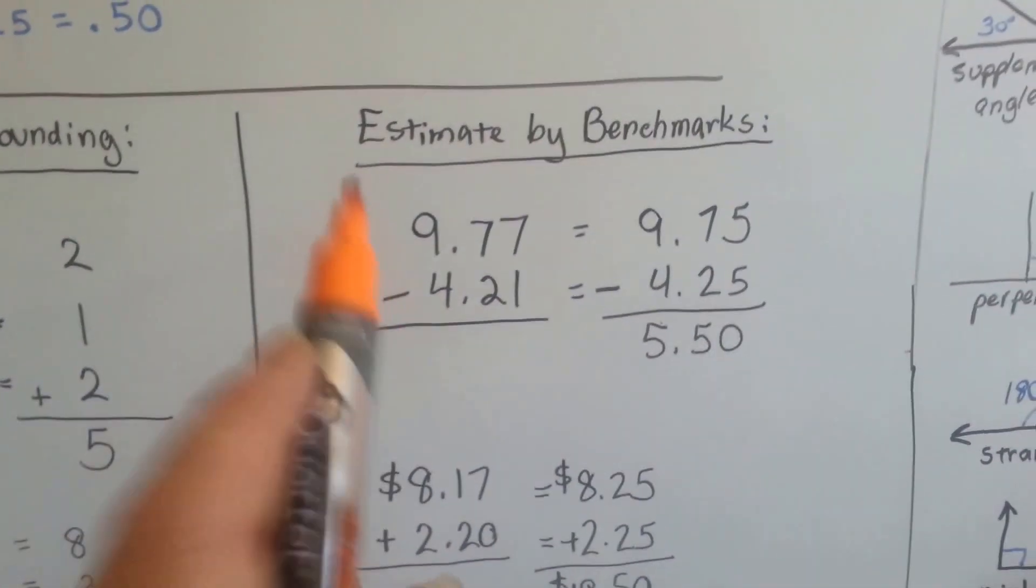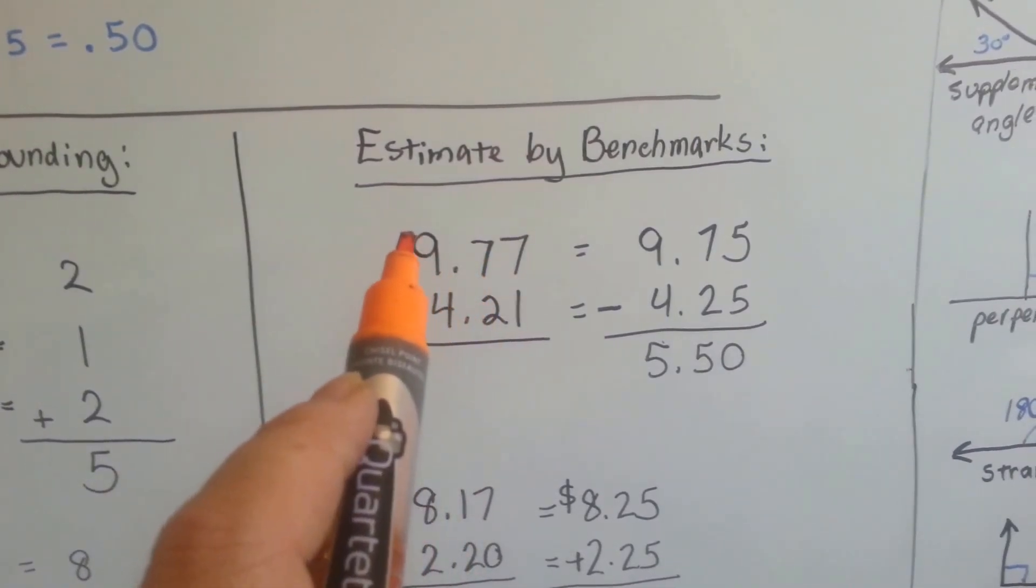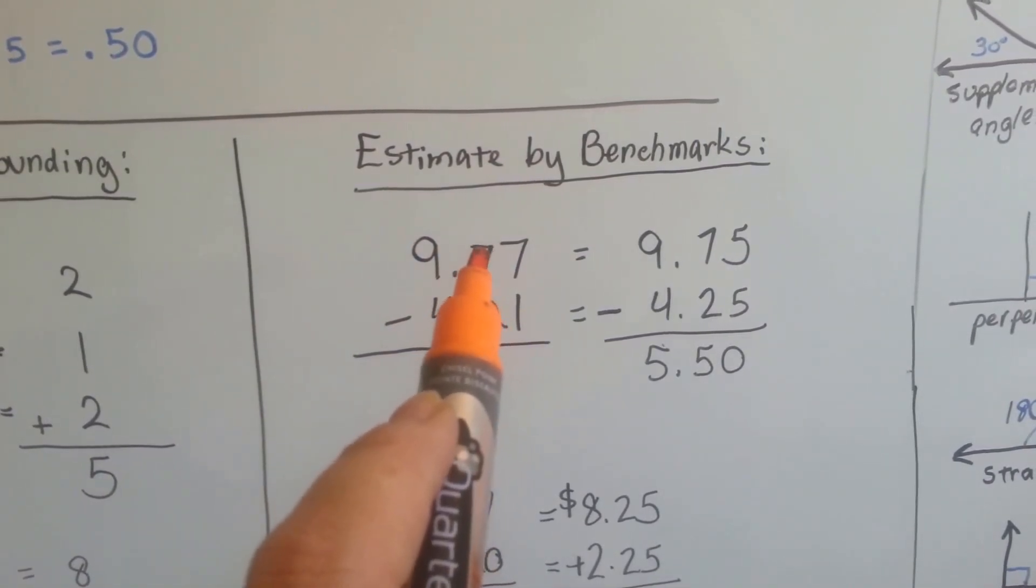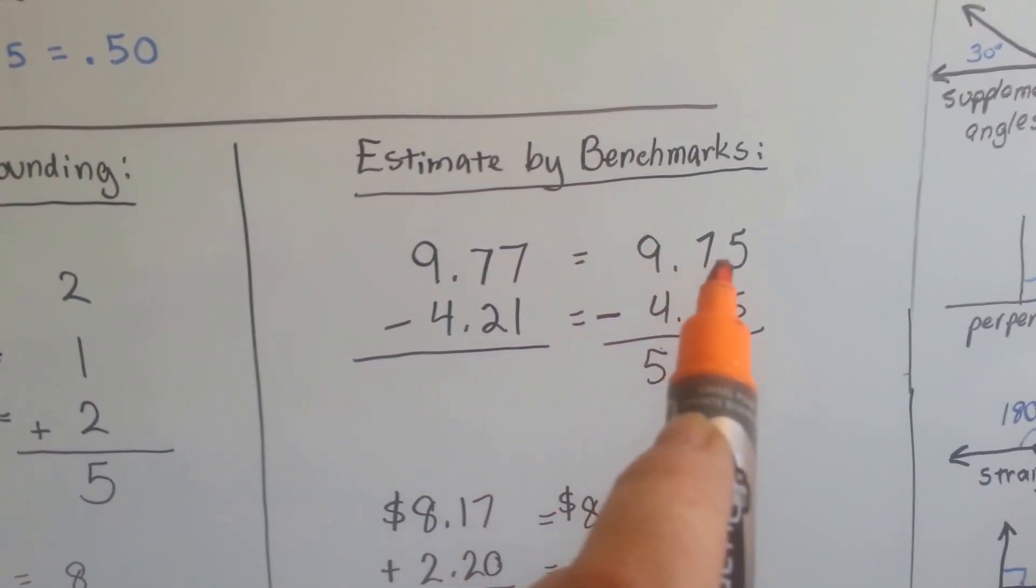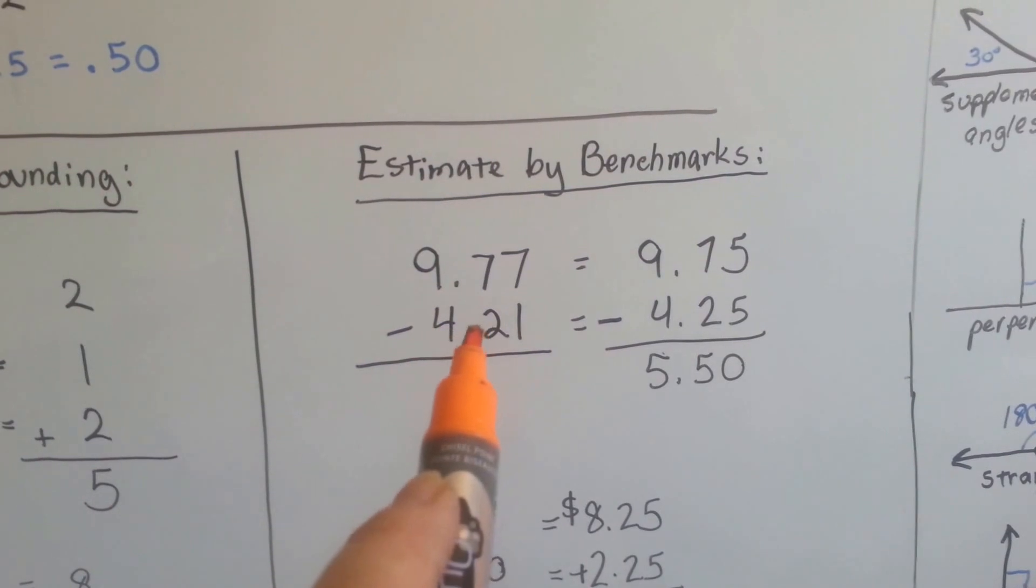Estimating by benchmarks, we think money. 9 and 77 hundredths is thought of as $9.77. We can round it off to $9.75. 4 and 21 hundredths becomes $4.21. We round it to 4.25.